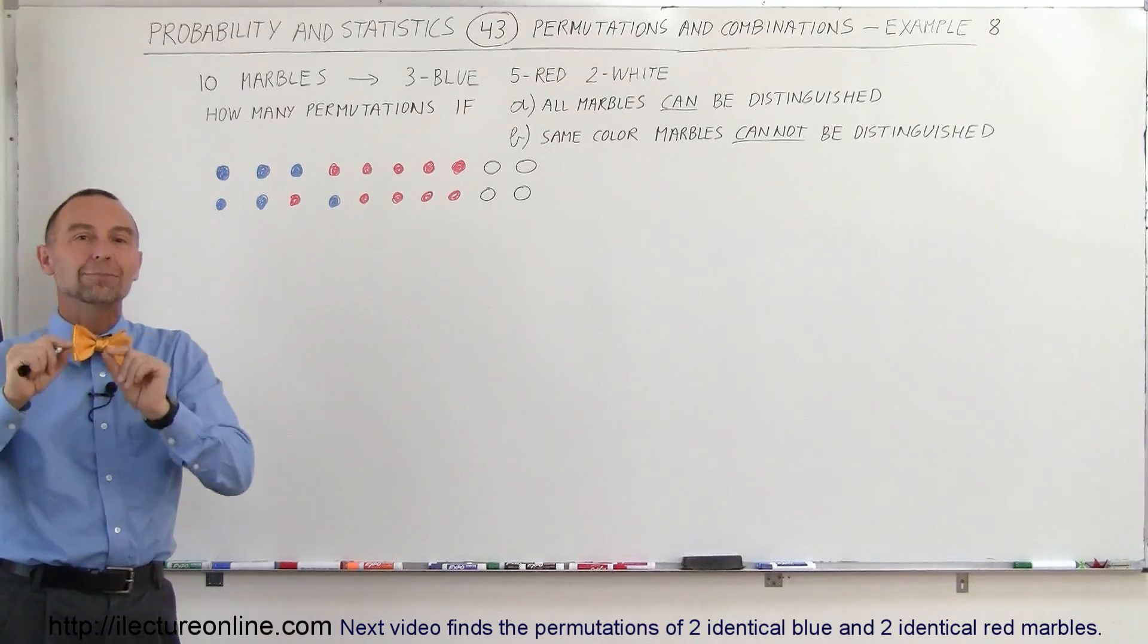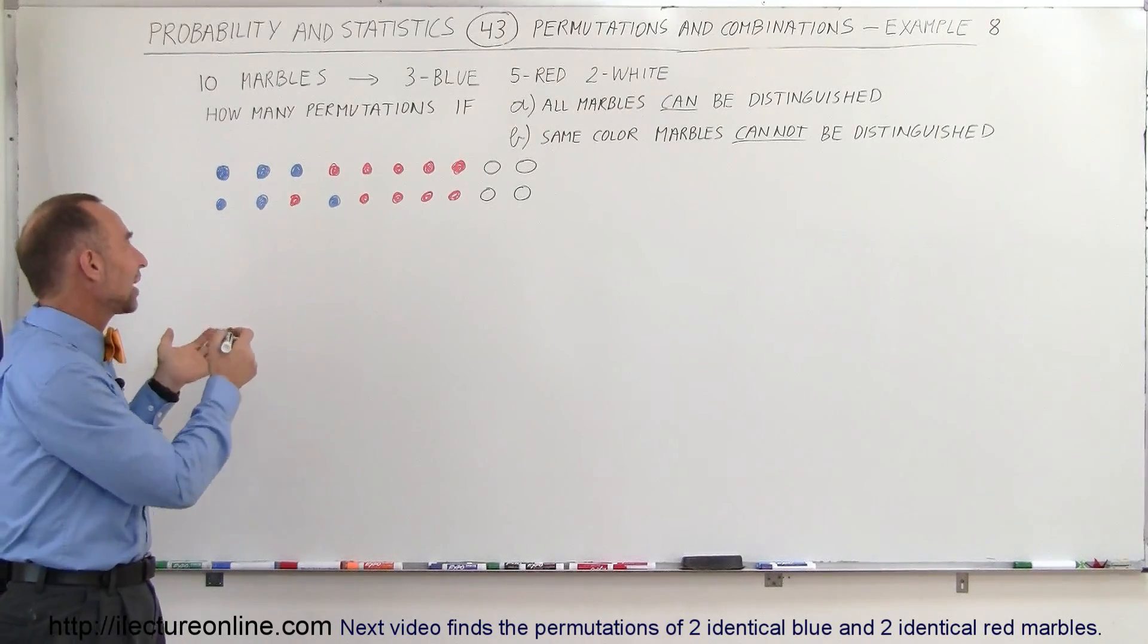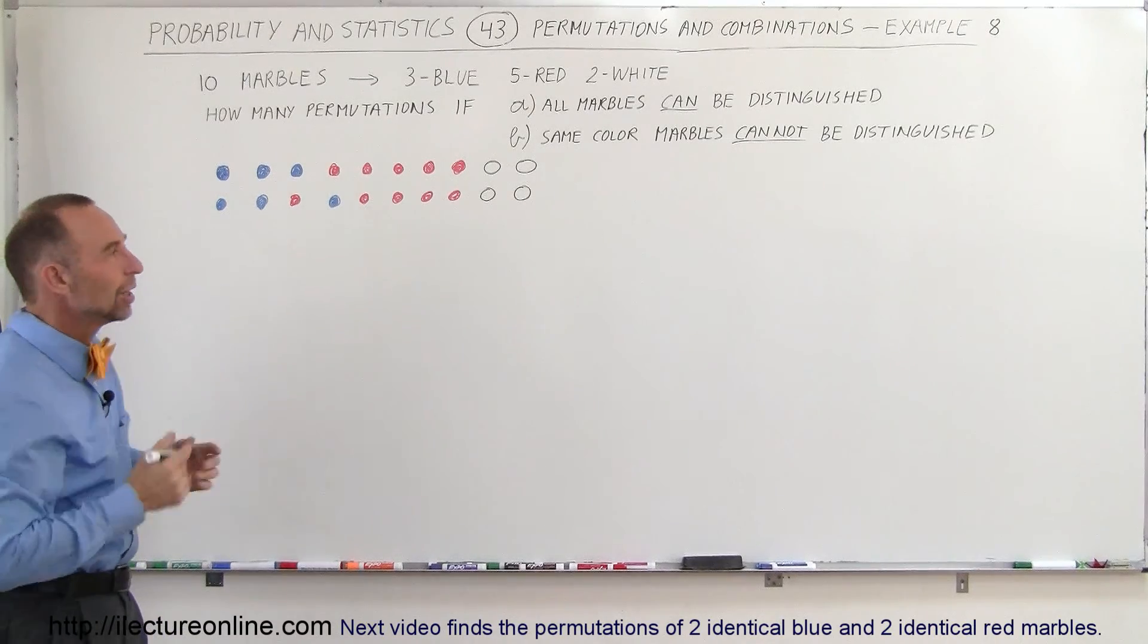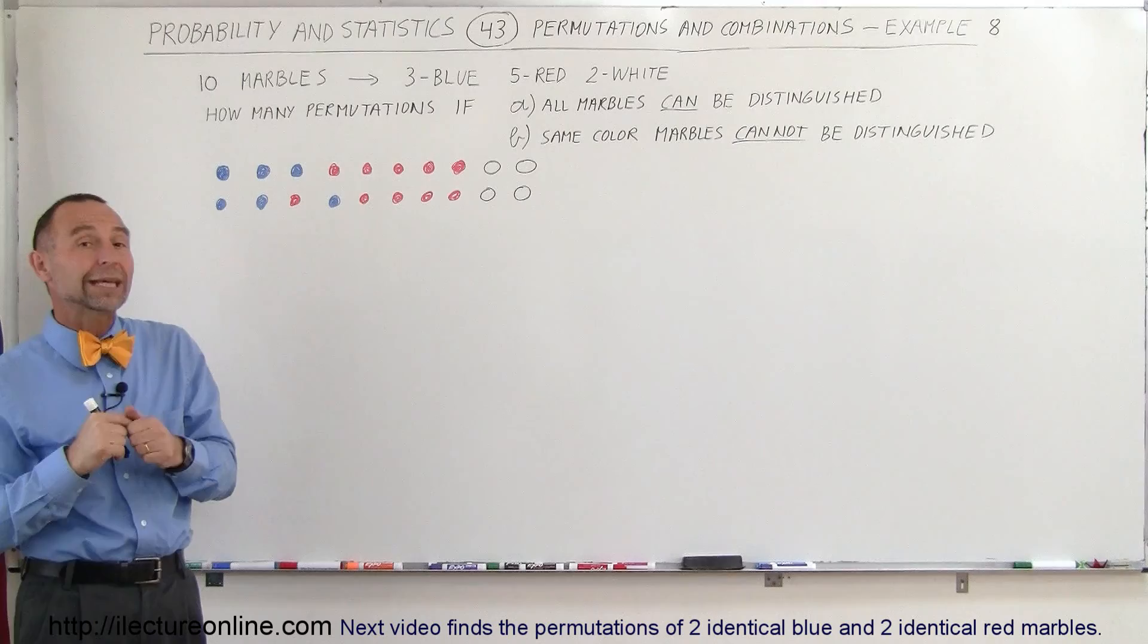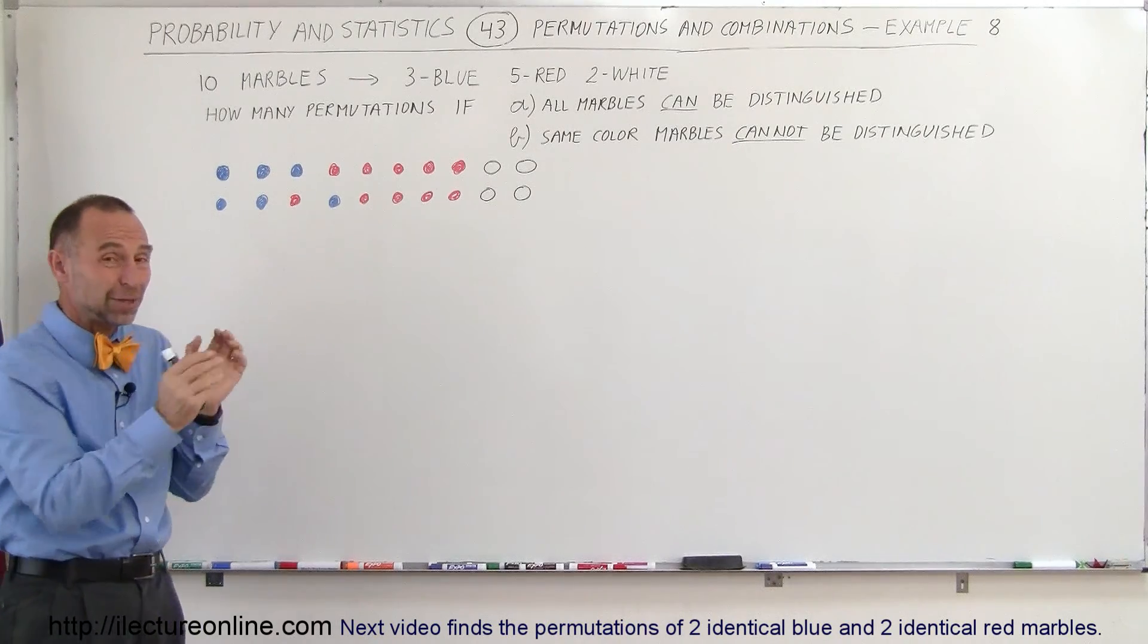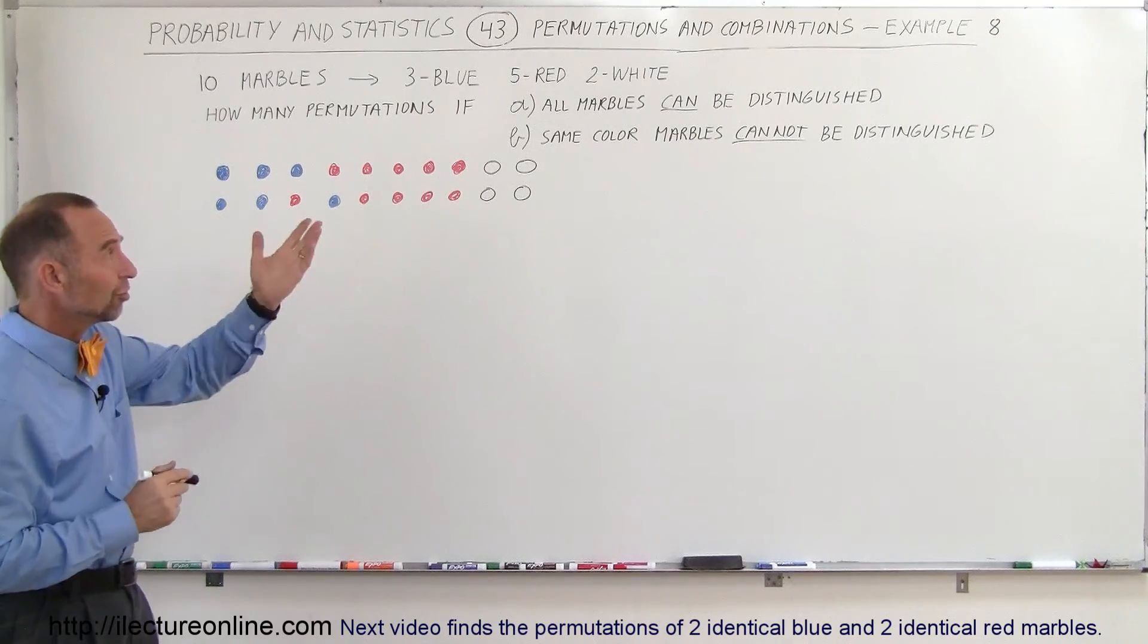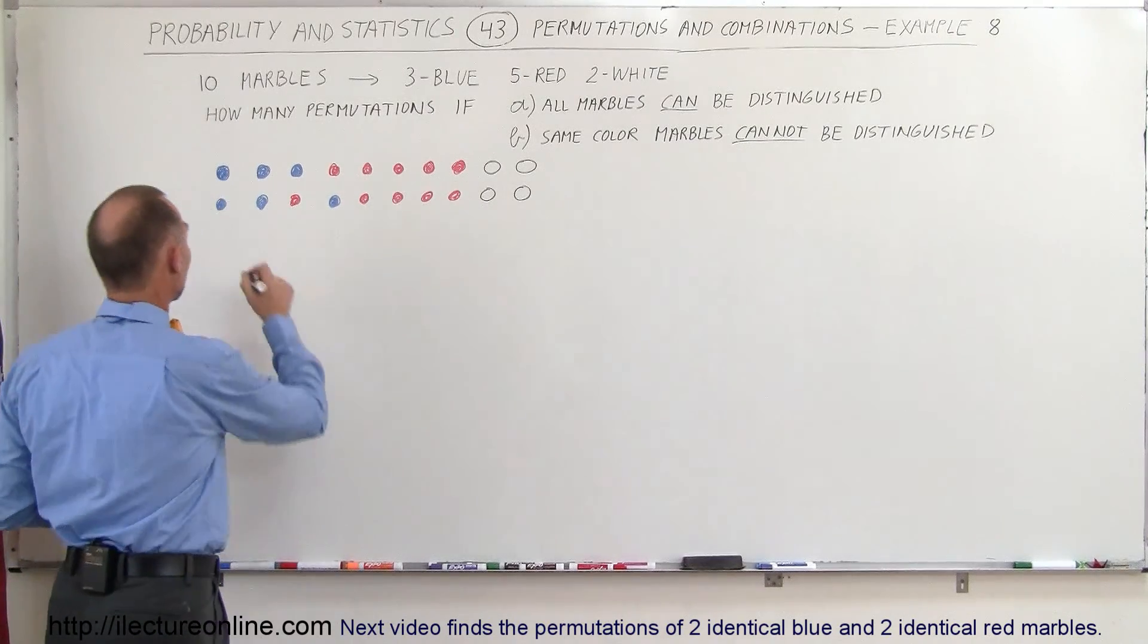First of all, if all the marbles can be distinguished—you can replace the marbles by numbers or something like that—how many different ways can you rearrange them? Then we're going to do it again, assuming that the same color marbles cannot be distinguished. There's a special technique to use for that. The first technique on part A, that's very straightforward.